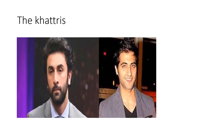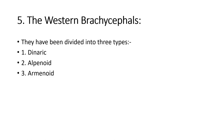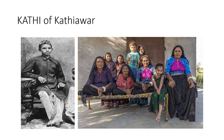Coming to Western Brachycephals, which are further divided into three parts: Dinaric, Alpinoid, and Arminoid. Alpinoids are characterized by broad head, rounded occiput, prominent nose, medium stature, round face, light skin color, and abundant body hair. Body is thickly set. This type is found among Banias of Gujarat, Khatris of Kathiawar, and Kayasthas of Bengal.